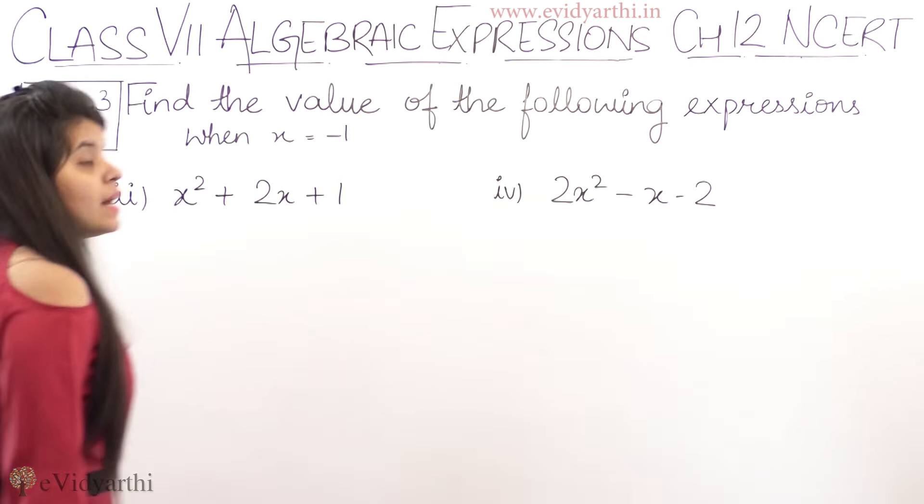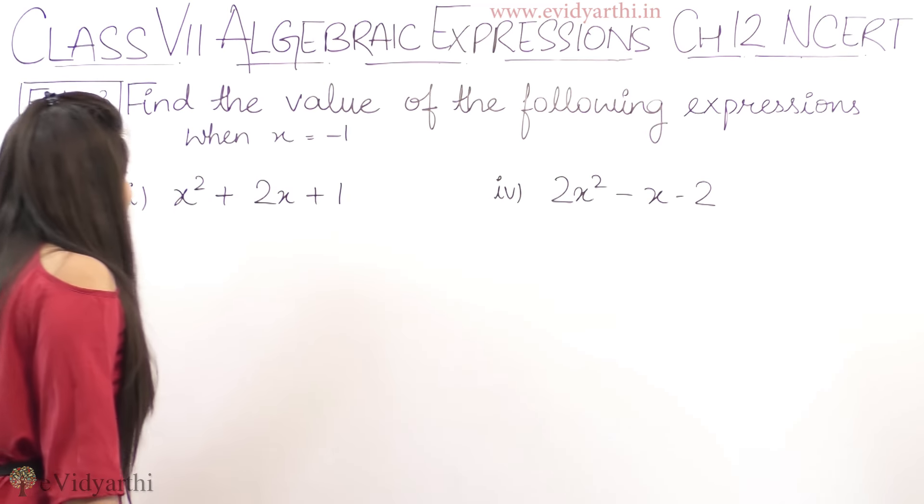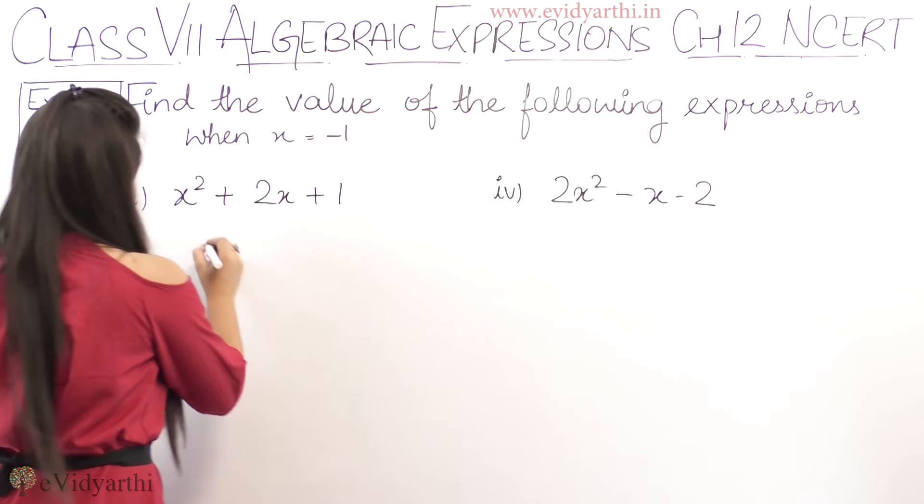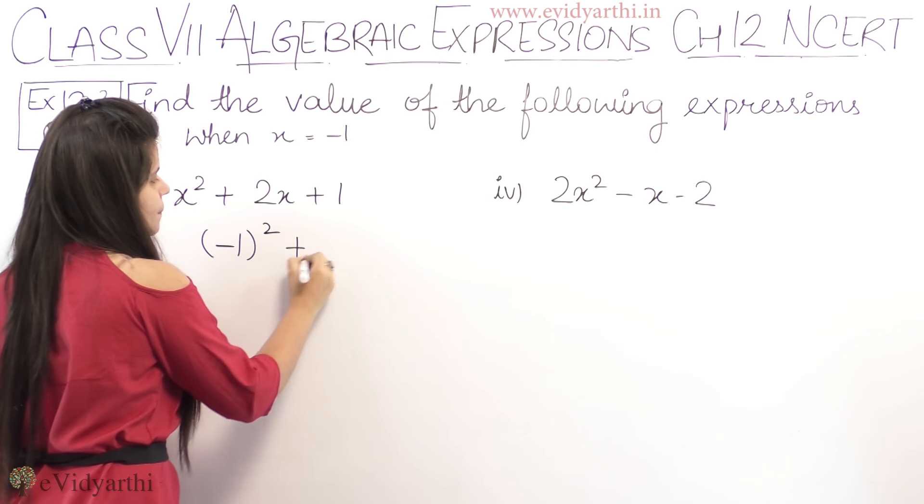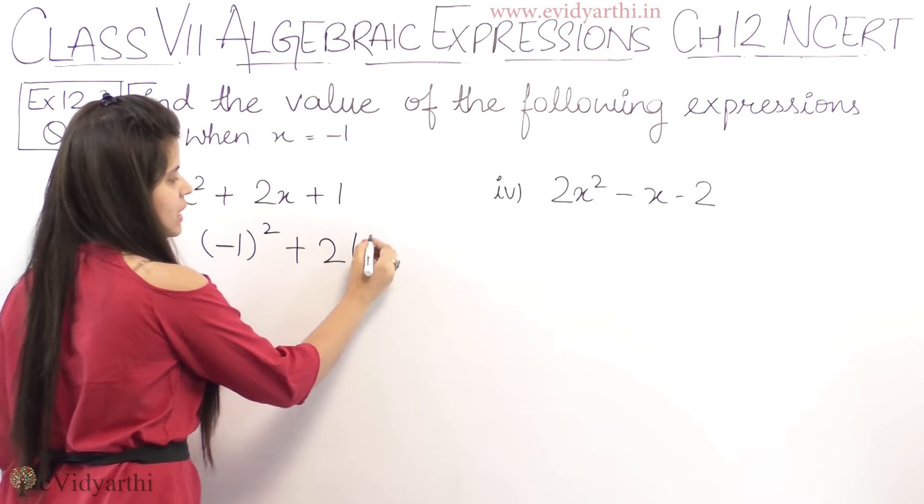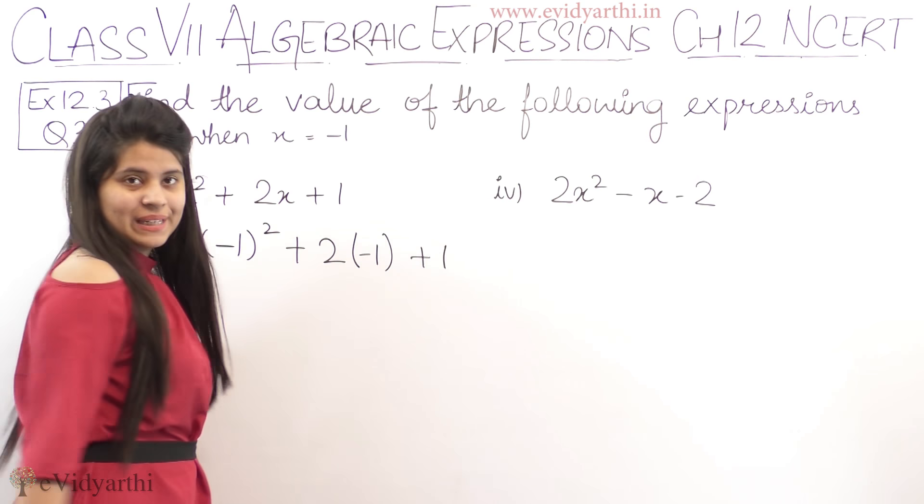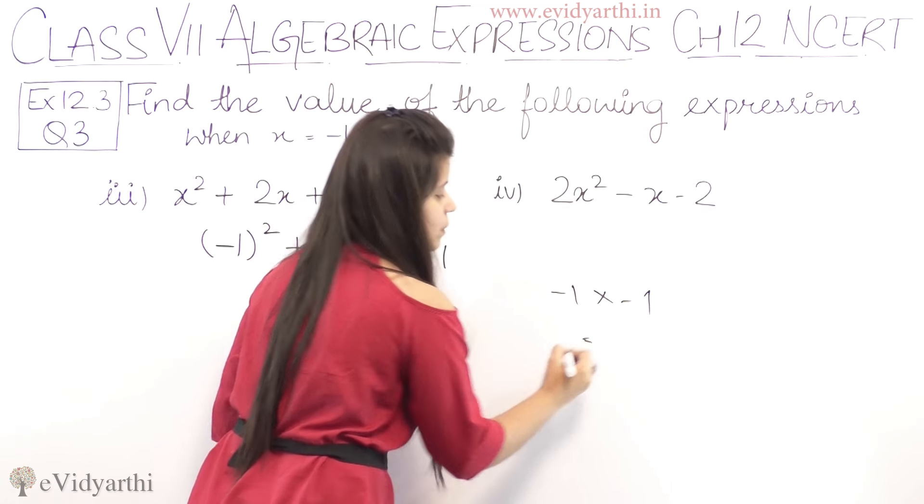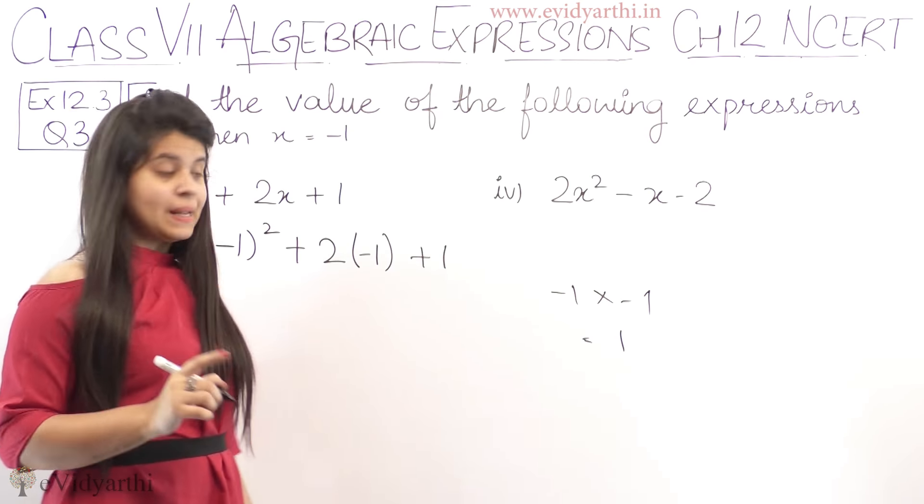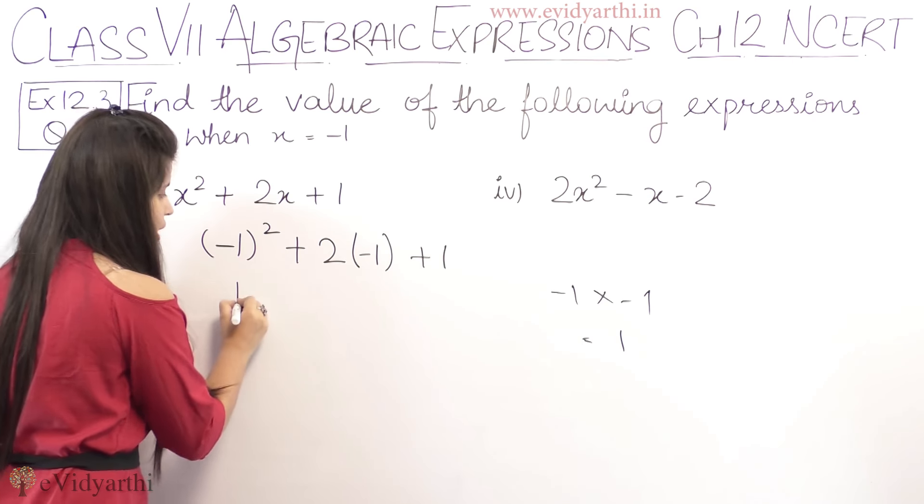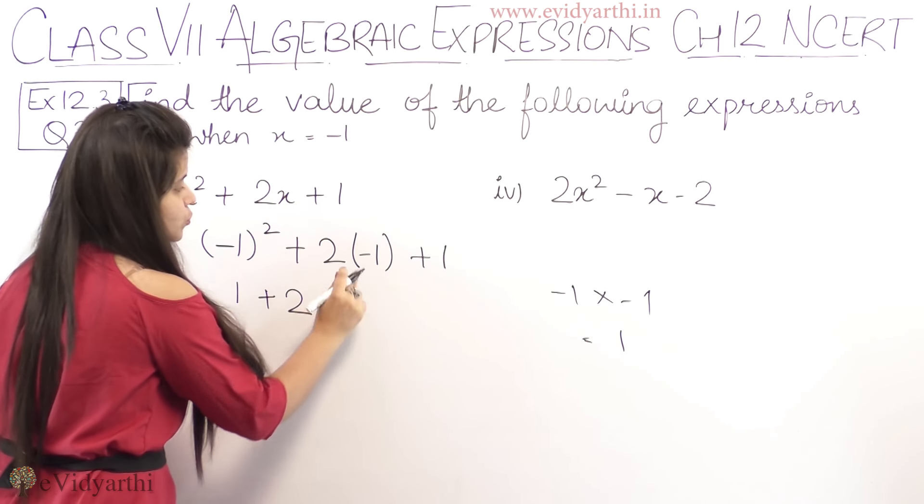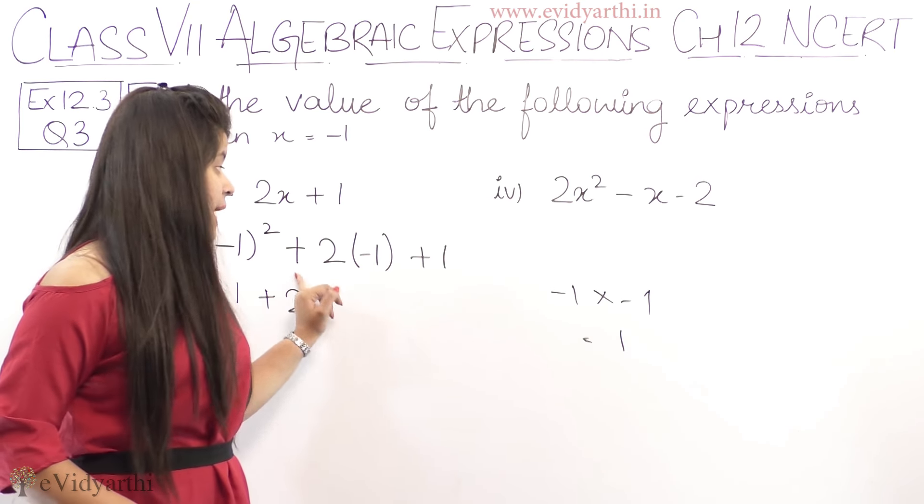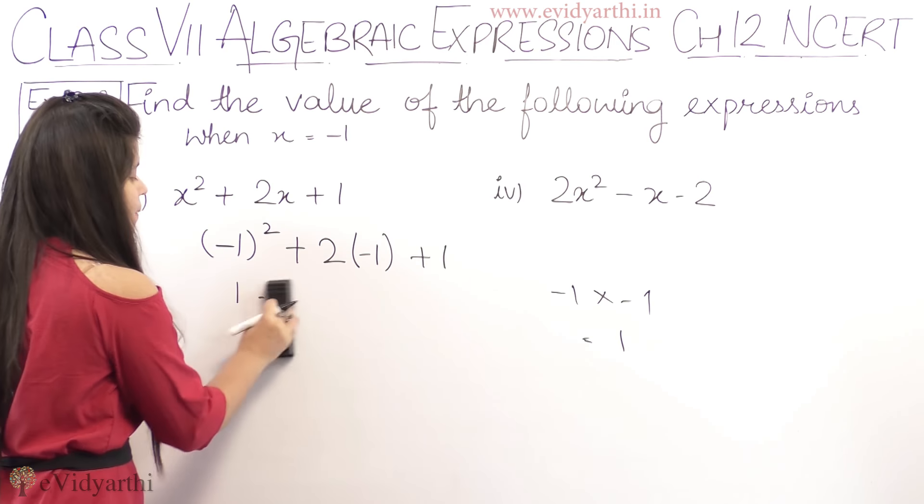Now coming to the third part. Third part has x square plus 2x plus 1. Again x ki value minus 1 put karna hai. So it becomes minus 1 square plus 2 times x ki value minus 1 plus 1. Minus 1 ka square, minus 1 into minus 1 will be 1. Minus minus plus, so minus 1 ka square is 1. Then we have plus 2. No, it is 2 into 1, so 2, but sign is plus minus minus, so it becomes minus 2.